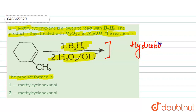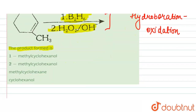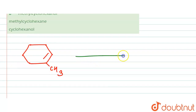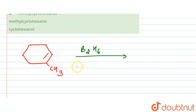These reagents tell us we have a hydroboration-oxidation reaction. In the first step, 1-methylcyclohexene reacts in the presence of B₂H₆ in THF. This is our hydroborating agent, which is very reactive.